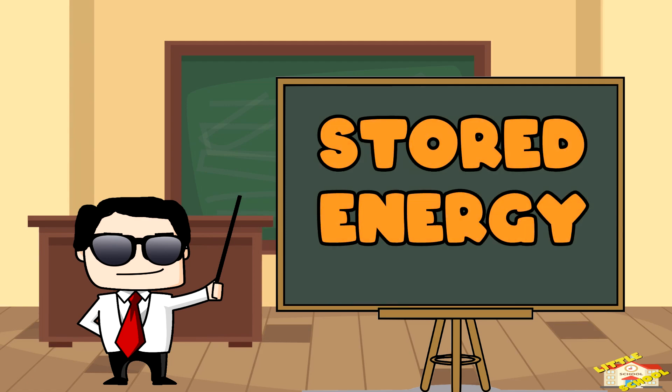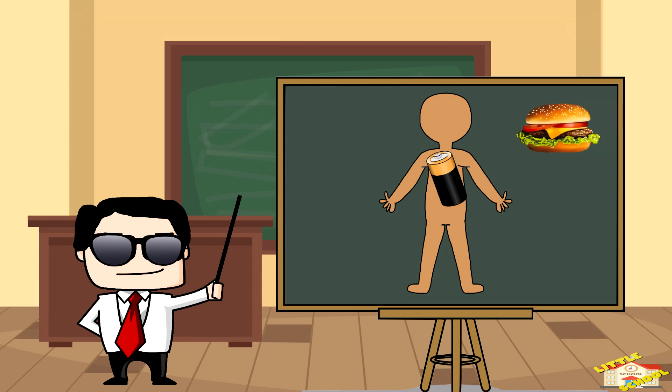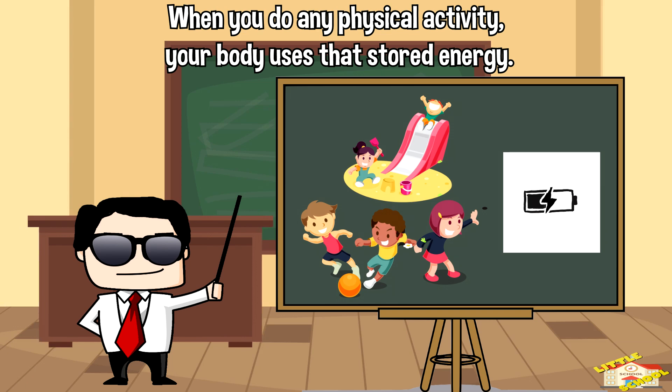Think of chemical energy like a battery in your body. When you eat, you're essentially charging up your energy battery. And when you run or do any physical activity, your body uses that stored energy to make your muscles work.